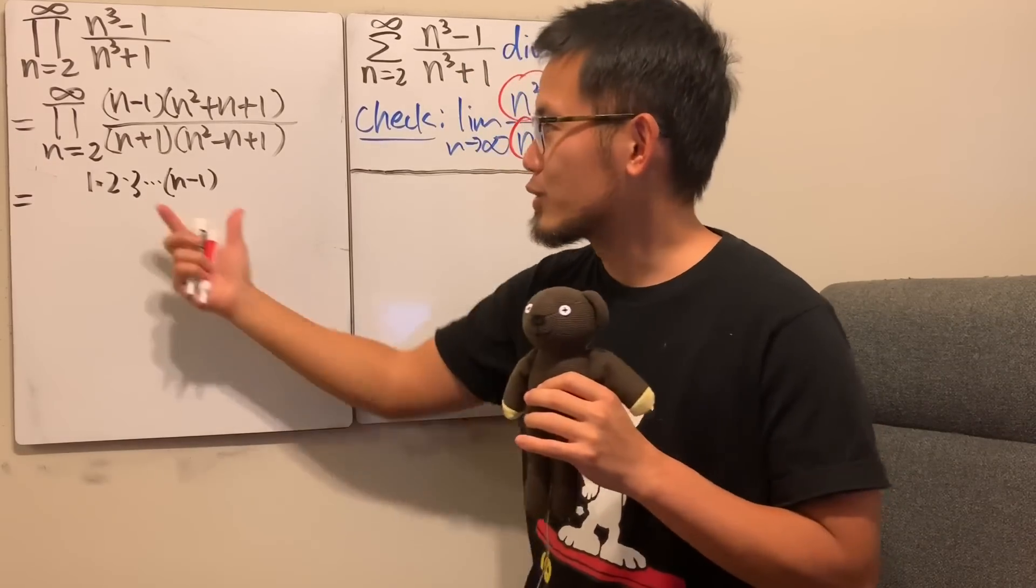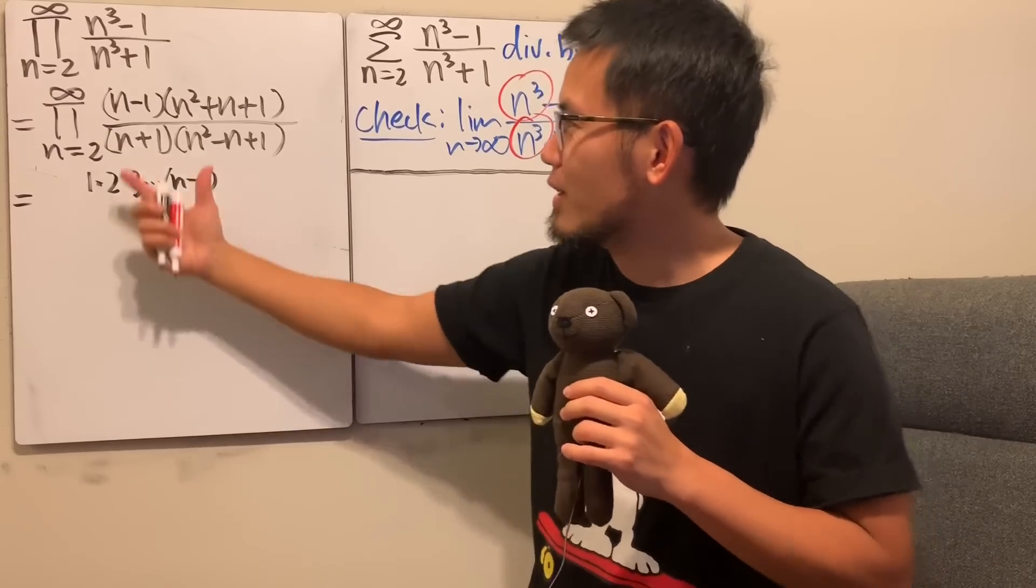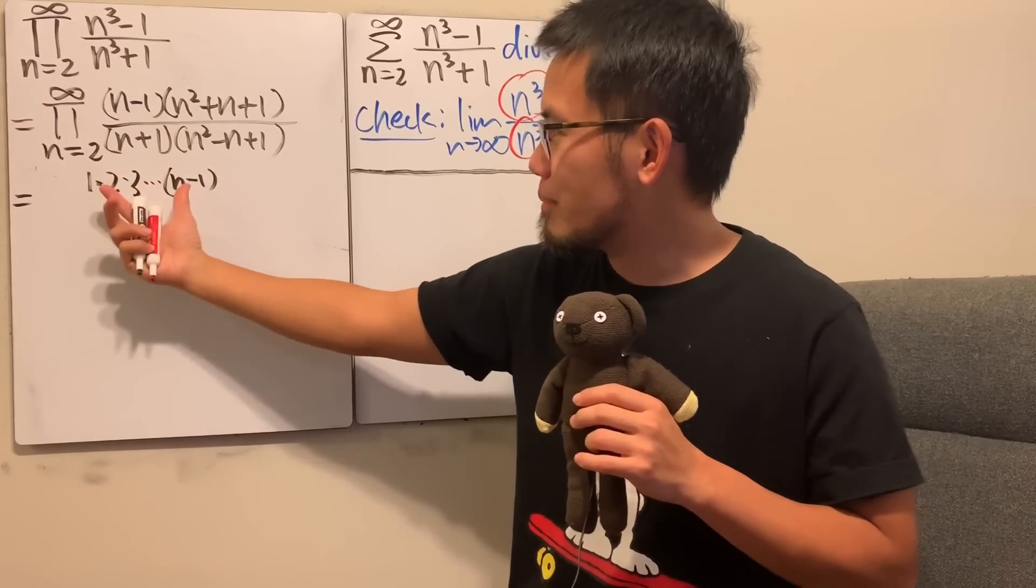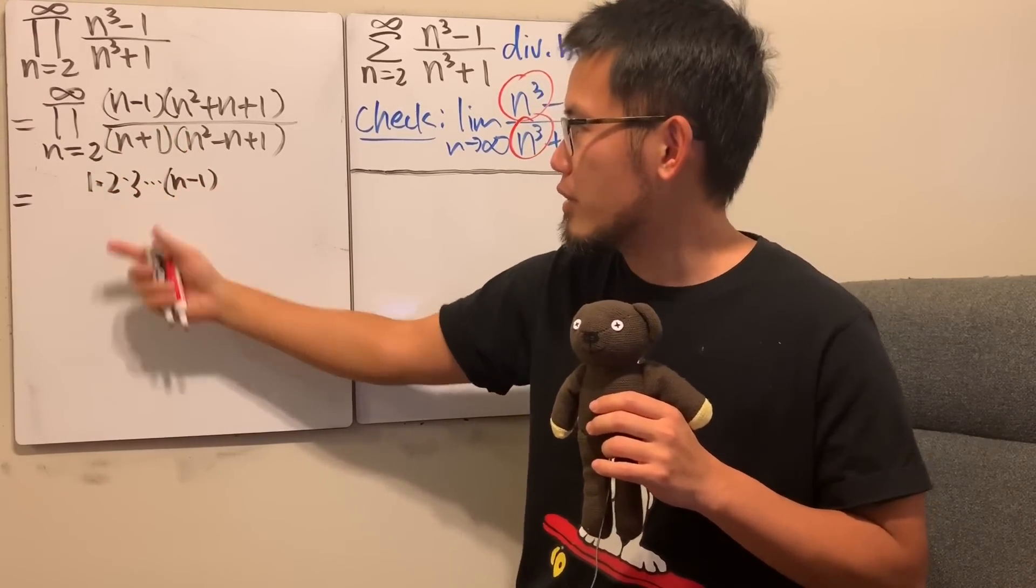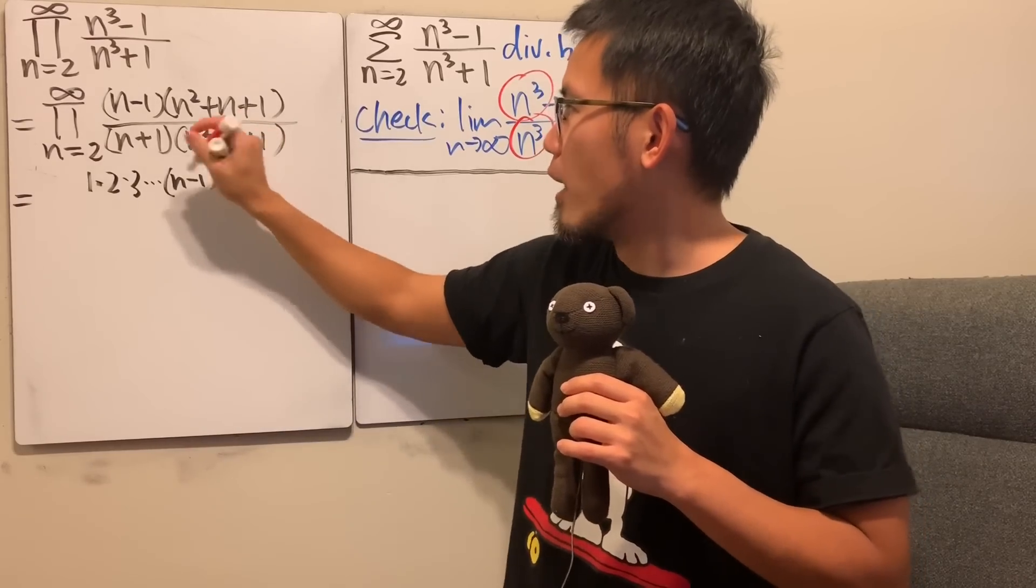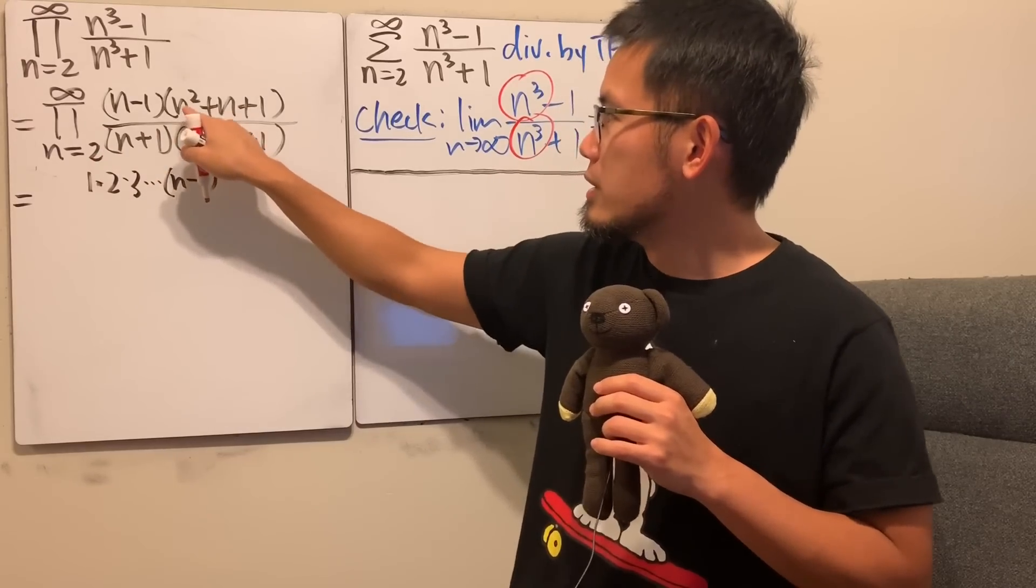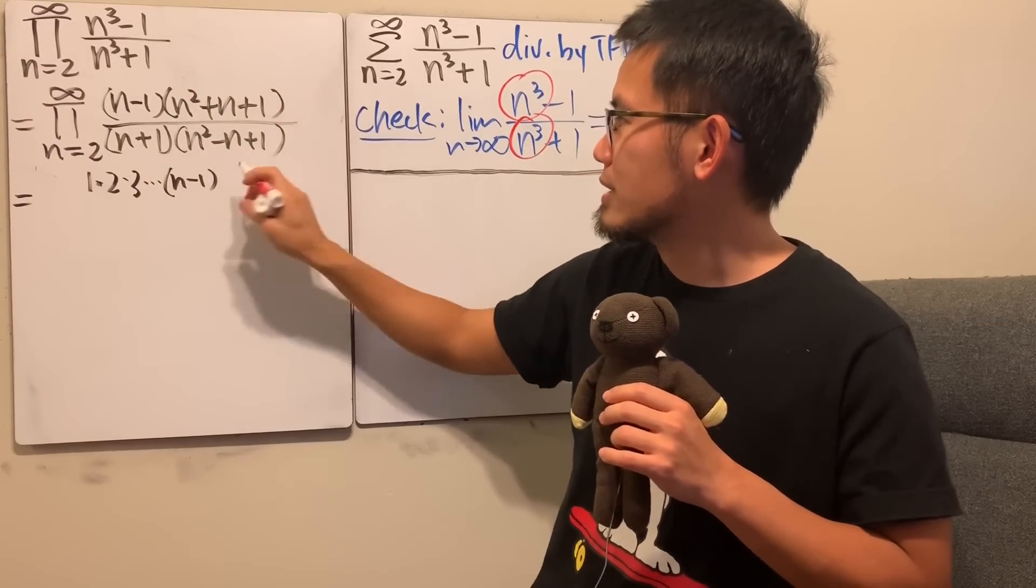So, when we plug in a bunch of numbers, n dot n, we have this right here, and then for this part, I will just do this in red. Plug in 2 in here, this is 4 plus 2, and then plus 1 is 7, like this. And then plug in 3,